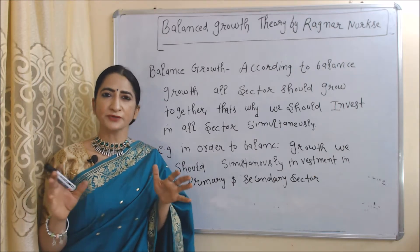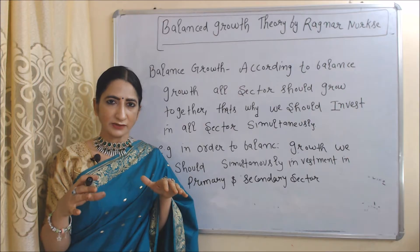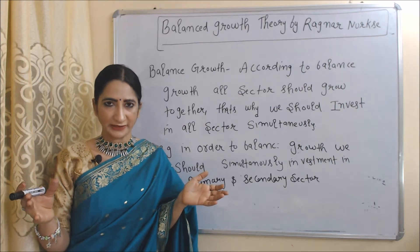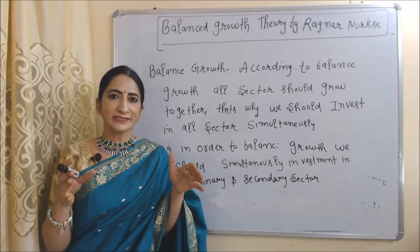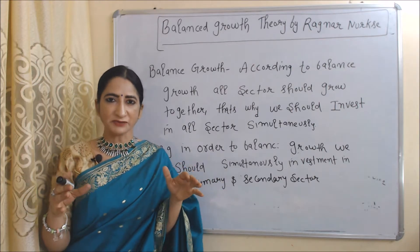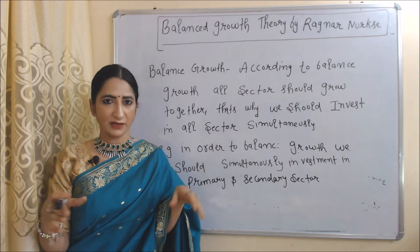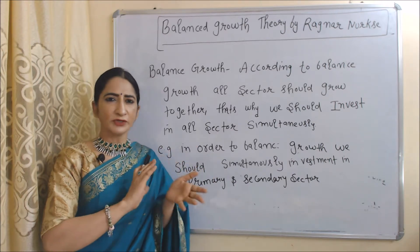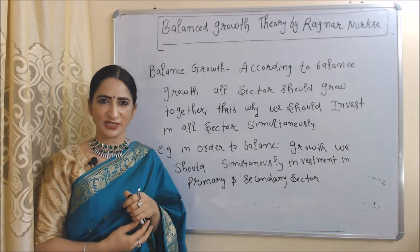So what do you mean by balanced growth? According to balanced growth, all sectors of the economy should grow together. That's why we should invest in all sectors simultaneously. For example, in order to achieve balanced growth, we should simultaneously invest in primary and secondary sectors.